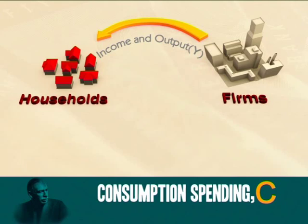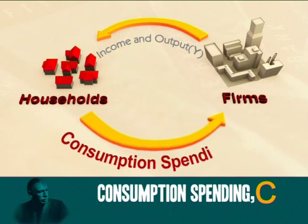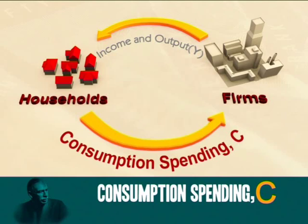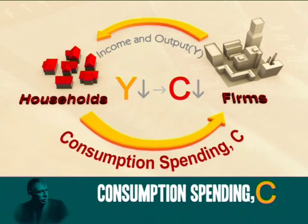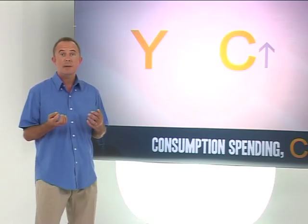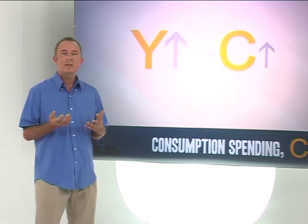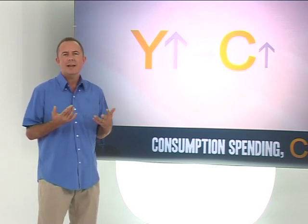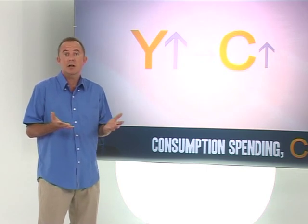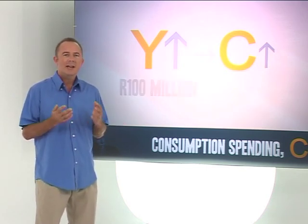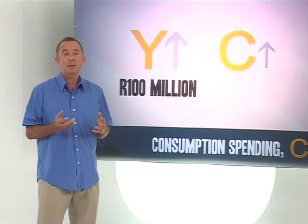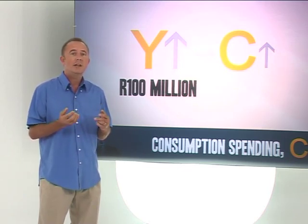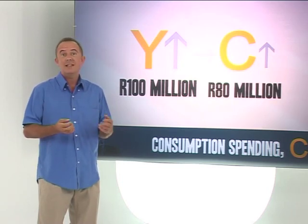In terms of our circular flow model, we can now add this spending flow between households and firms — what we know as consumption spending, C. There is a positive correlation between Y and C. Higher income causes higher consumption spending, and vice versa. But it is important to note that this increase in consumption spending is usually less than the increase in income. If national household income increases by 100 million rand, consumer spending will also rise, but only by perhaps 80 million rand.